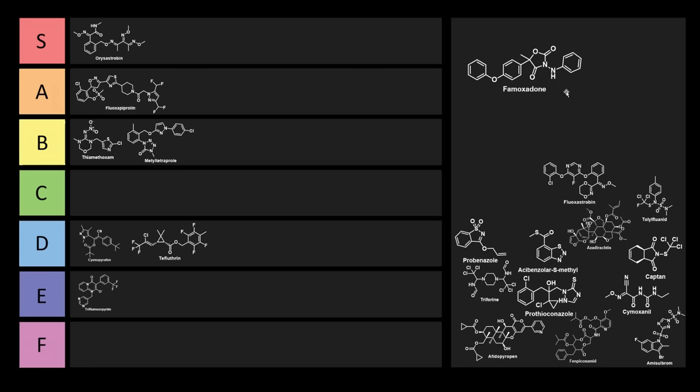Now famoxidone is used as a fungicide. It's a quinone outside inhibitor as well. And it's used against specific pathogens such as plasmopara viticola, as well as alternaria solani. There's several ones that it targets. It's pretty cool looking, but compared to some of the other ones here, I think it's a little bit disappointing. We're going to probably have to put this one into E-tier.